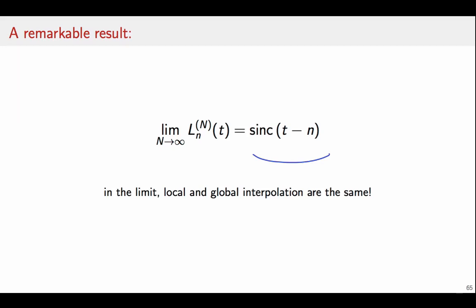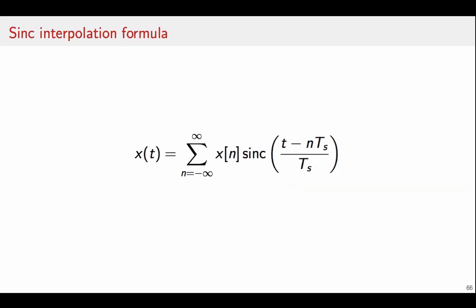However it tells us that we have an optimal result that we can try to approximate as well as we can afford. The famous sinc interpolation formula, therefore, is the following. It is a mixed domain convolution, once again. Here we state the formula for an arbitrary interpolation interval Ts, and it is a linear combination of shifted and scaled versions of the sinc function weighed by the discrete time samples.